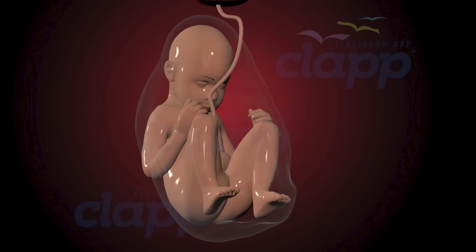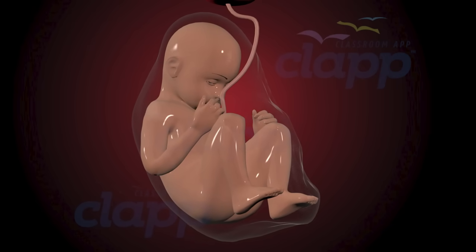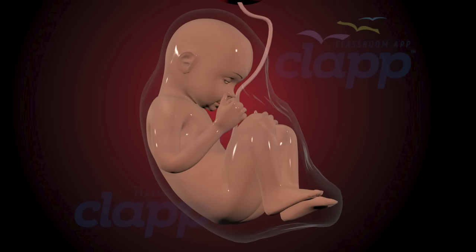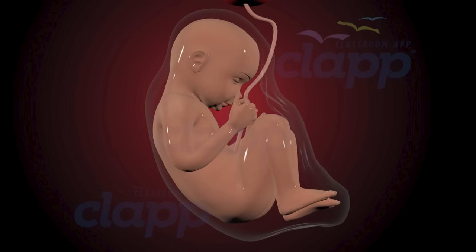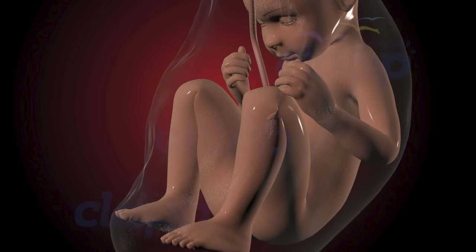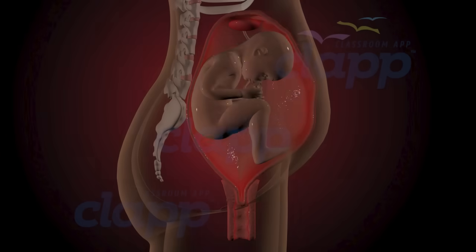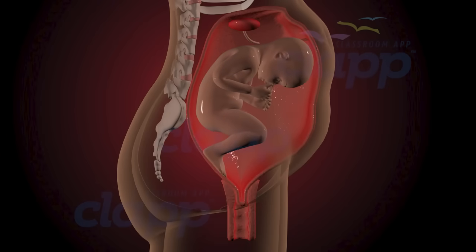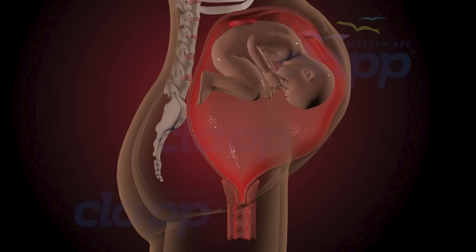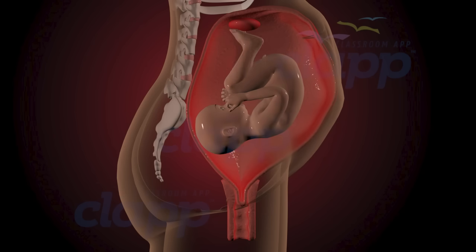In the third trimester, from week 28 until birth, the fetus undergoes final preparations for life outside the womb. Organs mature further, muscles strengthen, and the fetus begins to settle into position for birth. By this stage, most fetuses will settle into a head-down position in preparation for birth, which helps to facilitate a smoother delivery process.